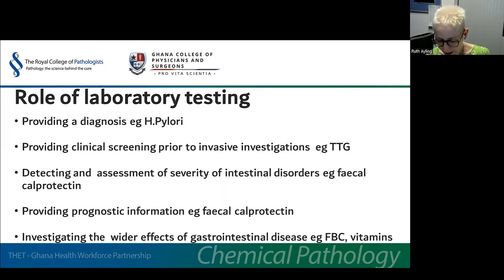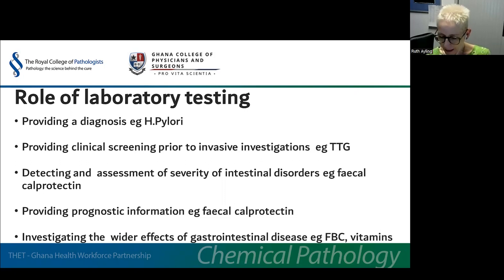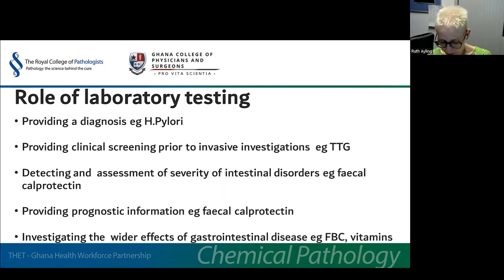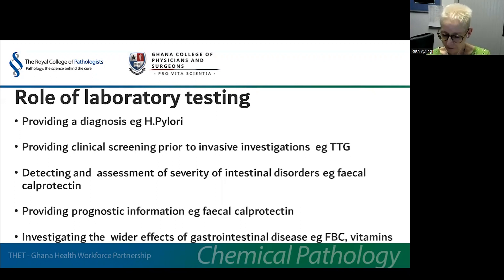Laboratory tests can help in various ways. They may provide a diagnosis — for example, the demonstration of H. pylori in a patient with symptoms may be all that is required to start treatment. They can provide clinical screening prior to invasive procedures, for example measurement of serum transglutaminase testing for celiac disease. Tests may also assist with detection and assessment of severity of intestinal disorders, or provide prognostic information, for example faecal calprotectin in inflammatory bowel disease. Laboratory tests can also be useful to investigate the wider effects of GI disease, for example measurement of full blood count, haematinics or vitamins, if malabsorption is suspected.